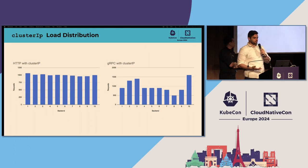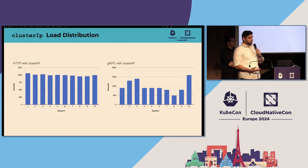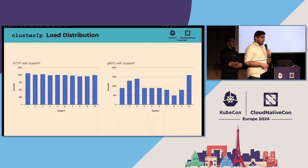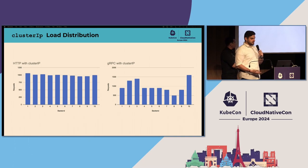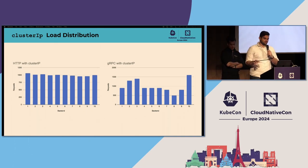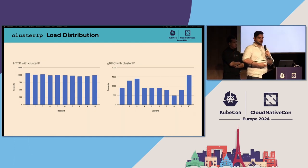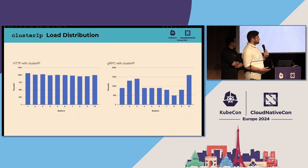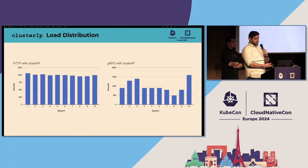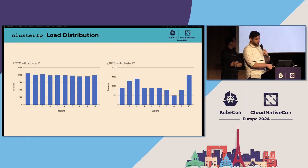The most common way to route requests to a collection of server pods in Kubernetes is a Service with type ClusterIP. Services with type ClusterIP get a virtual IP, or VIP, allocated. When a TCP connection is made to that IP, kube-proxy will balance that connection to one of the server pods associated with that service. When your client creates a new connection for each outgoing request, this will result in all of your requests being balanced across your server pods, so the request load and CPU utilization should be pretty uniform across all servers.